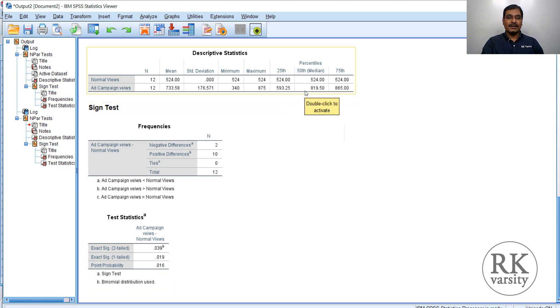The direction is on a positive side. From this result we can conclude that by running an ad campaign, there is a positive sign, or there is an increase in views in her channel. So this is how you need to perform one sample sign test.